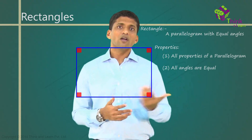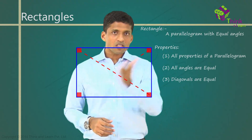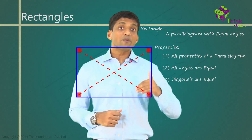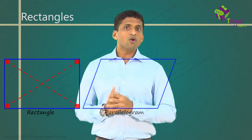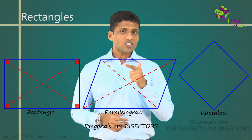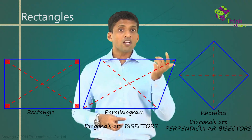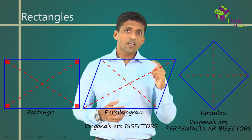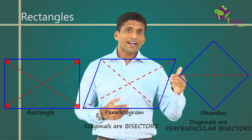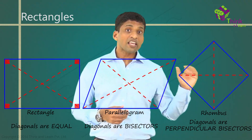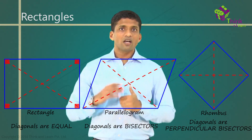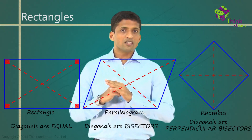That's an important point. One more is the diagonals — these two diagonals in this rectangle will be equal. Now, in a parallelogram, diagonals are just bisectors. In a rhombus, diagonals are perpendicular bisectors. Here, they are bisectors and equal. So, in a rectangle, diagonals are equal bisectors.